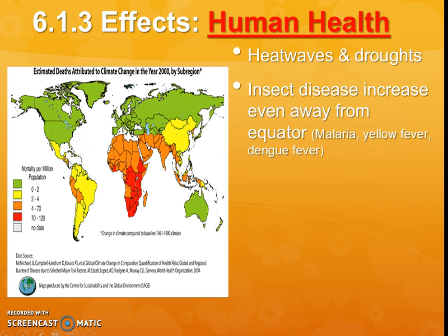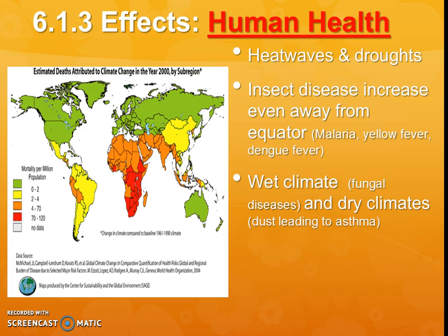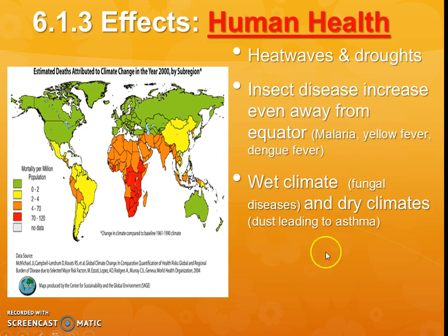Those diseases are starting to shift further north and further south away from the equator, so over time we might have to start being worried about them making their way toward us. We're also having extreme wet climates and extreme dry climates. That relates to human health problems — more people are dealing with asthma and fungal diseases because fungi like to grow when it is wet, and people have trouble with dust and asthma when it gets too dry.